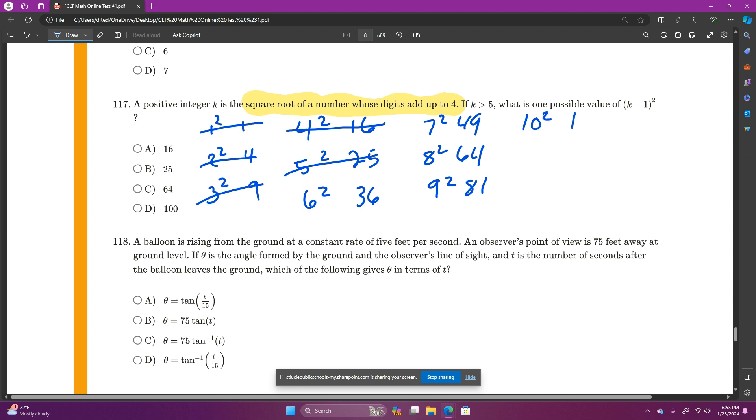10 squared would be 100, 1 plus 0 plus 0. 11 squared would be 121, 1 plus 2 plus 1 is 4. So those add up to 4.